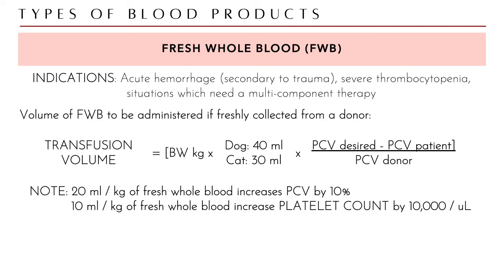If you don't know the donor's PCV, use this simplified rule: 20 ml per kg of fresh whole blood increases the PCV by 10%, meaning 2 ml per kg raises it by 1%. Additionally, 10 ml per kg of fresh whole blood increases the platelet count by 10,000 platelets per microliter.